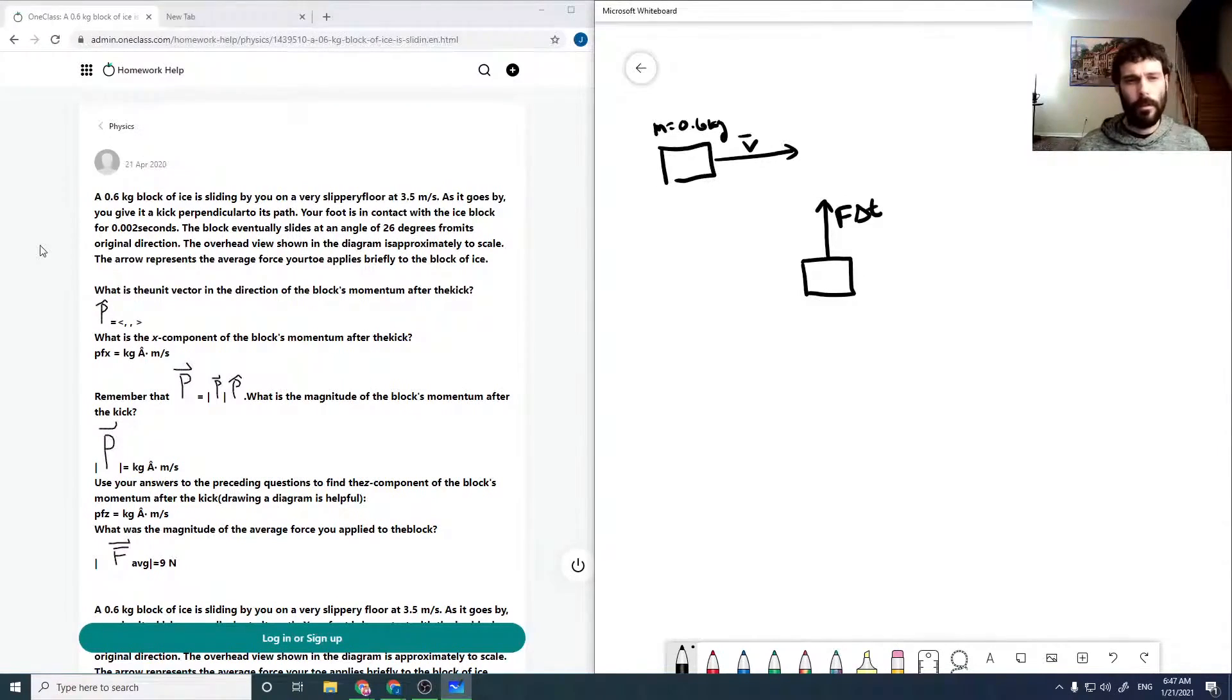Our delta t is 0.002 seconds and this causes the block to travel now with some velocity v prime, which is 26 degrees from its original direction, which was completely to the right.